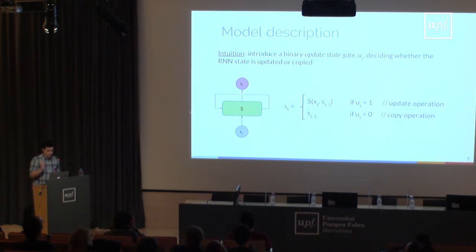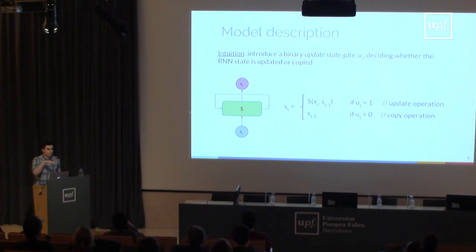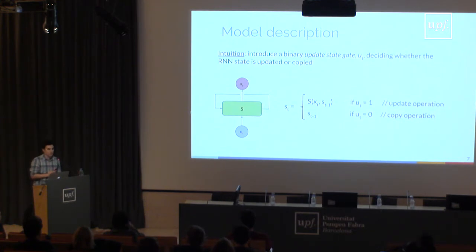A common question is: what's the difference between this and things like the input or forget gate in the LSTM? There are two main differences. First, this gate is scalar — it's a single value shared for the whole hidden state, so you either copy or update the whole thing. Second, it's binary: it's a hard zero or a hard one, not a sigmoidal output that converges asymptotically.